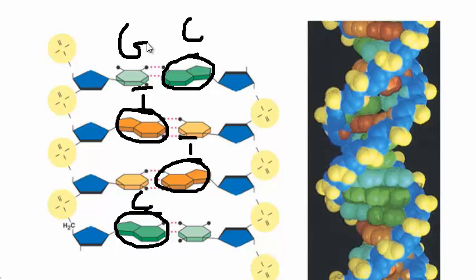Therefore, C has to bond across from a G, T has to bond across from an A, T and A, C and G. So there's the rungs of our DNA ladder, the bases that bond together.